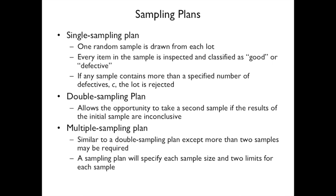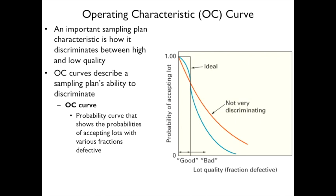The operating characteristic curve shows how well a sampling plan discriminates between high and low quality. The ideal curve has a sharp cutoff — perfectly distinguishing good from bad. A more realistic curve is less sharp, and a poorly discriminating plan has a gradual slope, allowing a significant portion of defective lots to pass. The operating characteristic curve describes the sampling plan's ability to discriminate between acceptable and unacceptable quality.